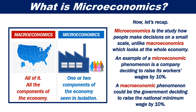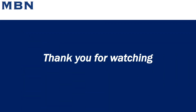Now let's recap. Microeconomics is the study of how people make decisions on a small scale, unlike macroeconomics, which looks at the whole economy. An example of a microeconomic phenomenon is a company deciding to raise its workers' wages by 10%. A macroeconomic phenomenon could be the government deciding to raise the national minimum wage by 10%. Thank you for watching this brief video on microeconomics.